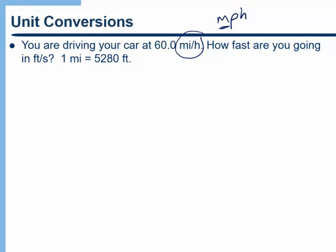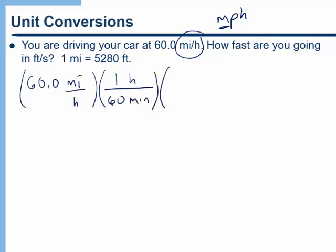Okay so how do we do this conversion? I'm going to start out with 60 miles per hour and what I now want to do is take that and first convert the time. So I want seconds on the bottom and therefore I know that in one hour there are 60 minutes and in one minute there are 60 seconds.